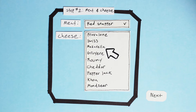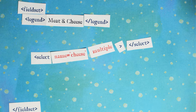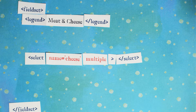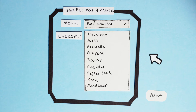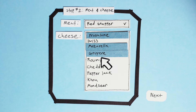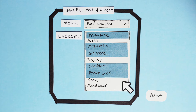Similar to radios, select options have a 'selected' attribute to indicate which item was picked. I can choose many cheeses, because this select element has the 'multiple' attribute. Here Daisy is selecting provolone, mozzarella, gruyere, cheddar, and pepper jack by holding the control key as she clicks on the options.